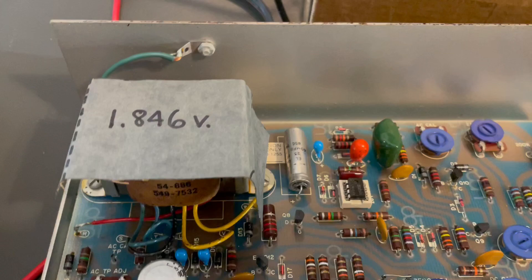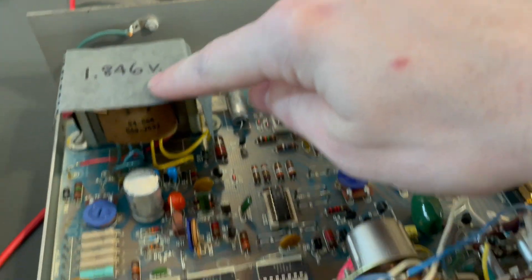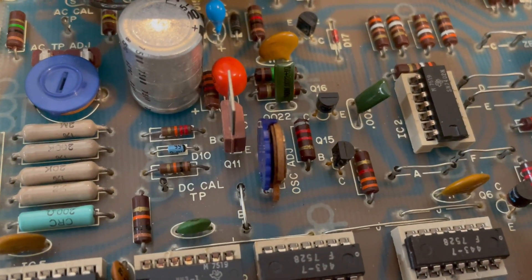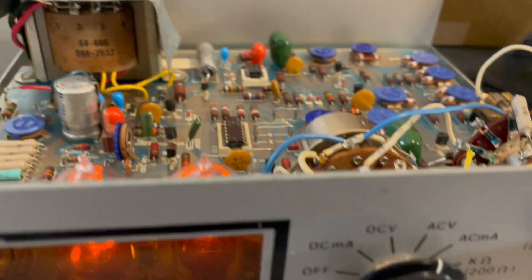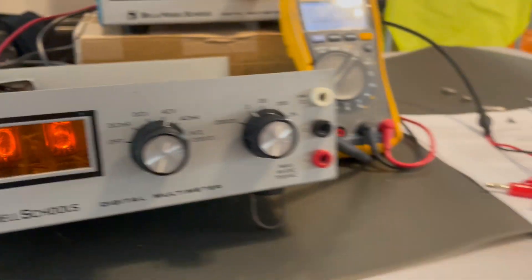There's an internal voltage reference that they've measured for you and written the exact value. Then there's this DC cal TP test point that you hook up your lead to. You would then dial in one of the little potentiometers until it read that correct value.